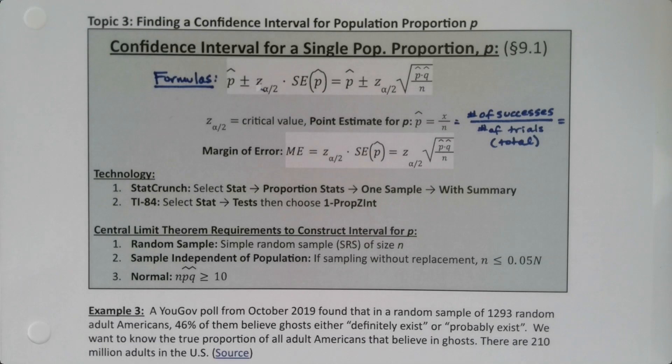We've learned the basics of confidence intervals and how to find critical values, so now it's time to put it all together and find a confidence interval from beginning to end for a single proportion.